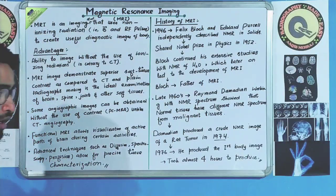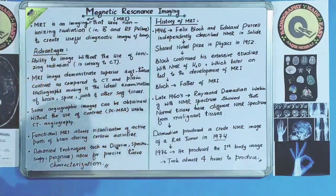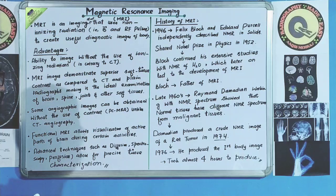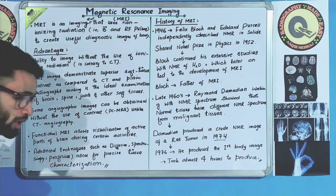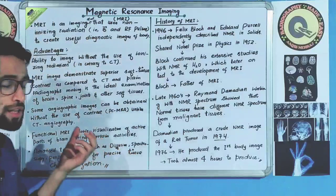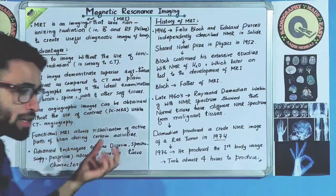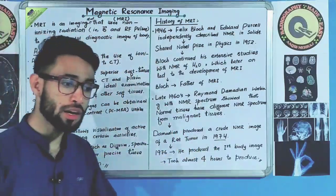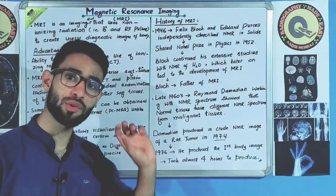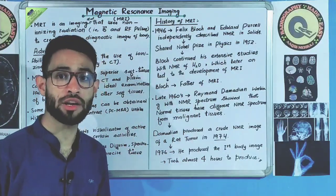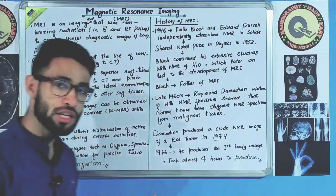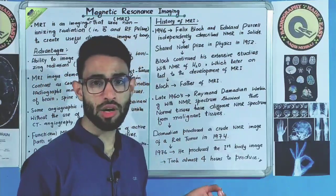The third advantage of MRI is that some angiographic images can be obtained without the use of contrast, unlike CT angiography. For example, phase contrast magnetic resonance angiography does not require contrast, whereas CT angiography and conventional angiography do require contrast.